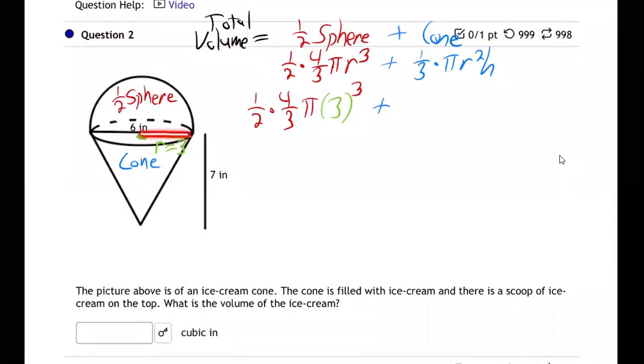And radius is always halfway across the circle. That's three.